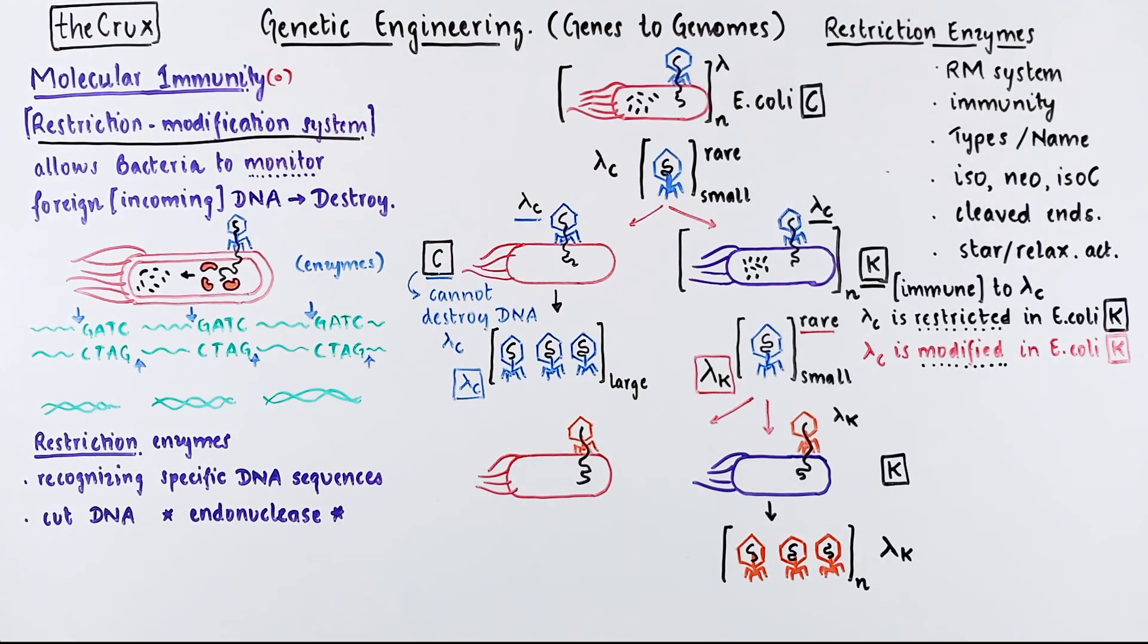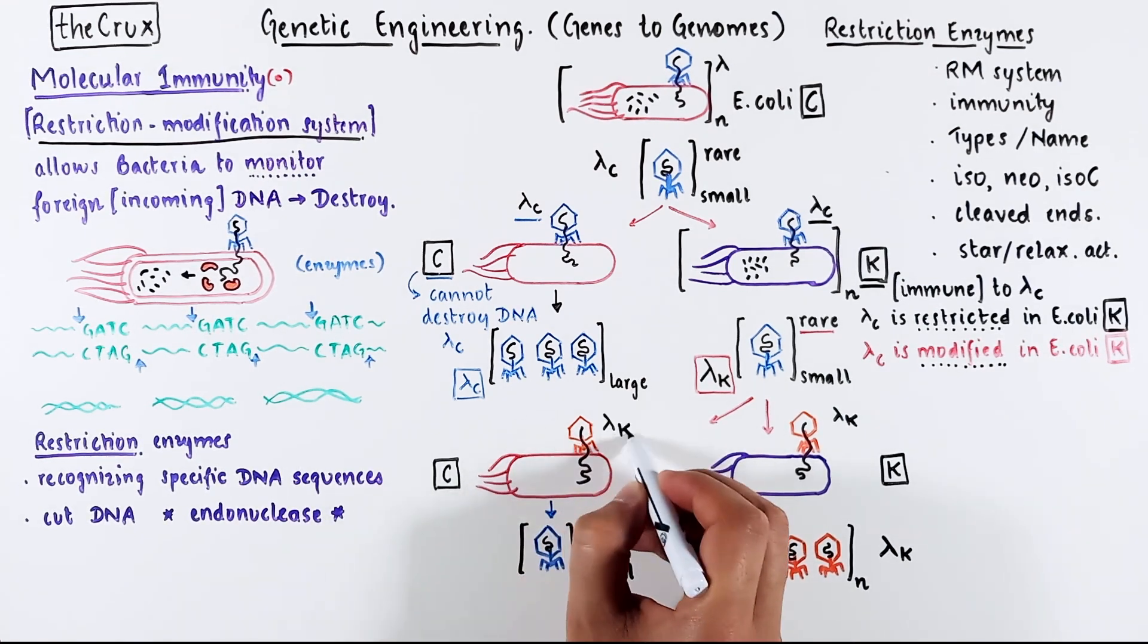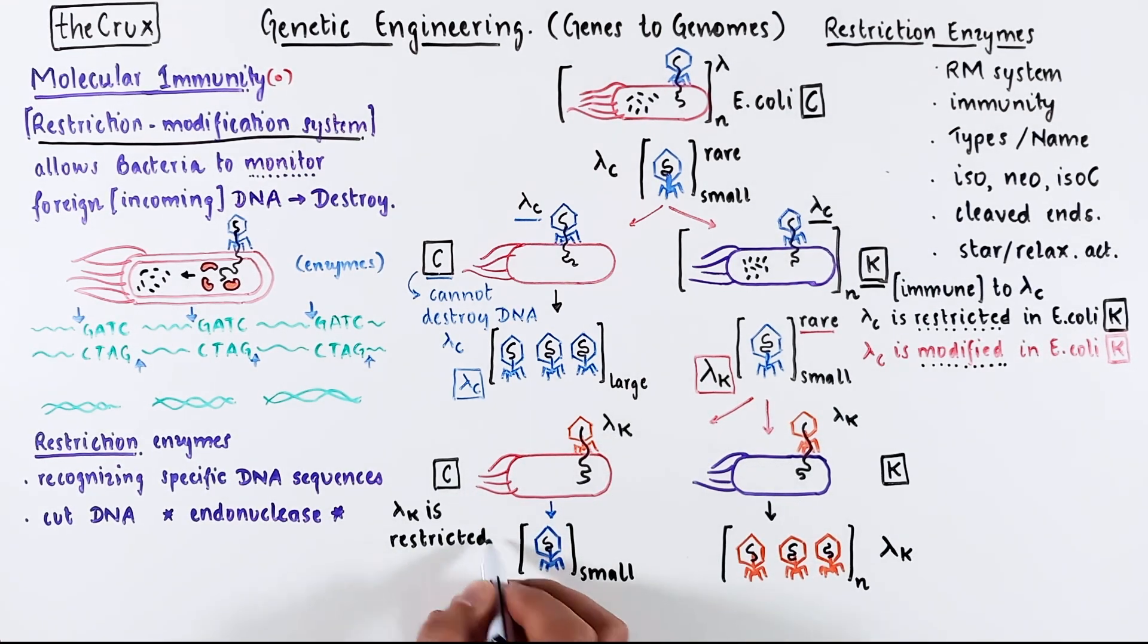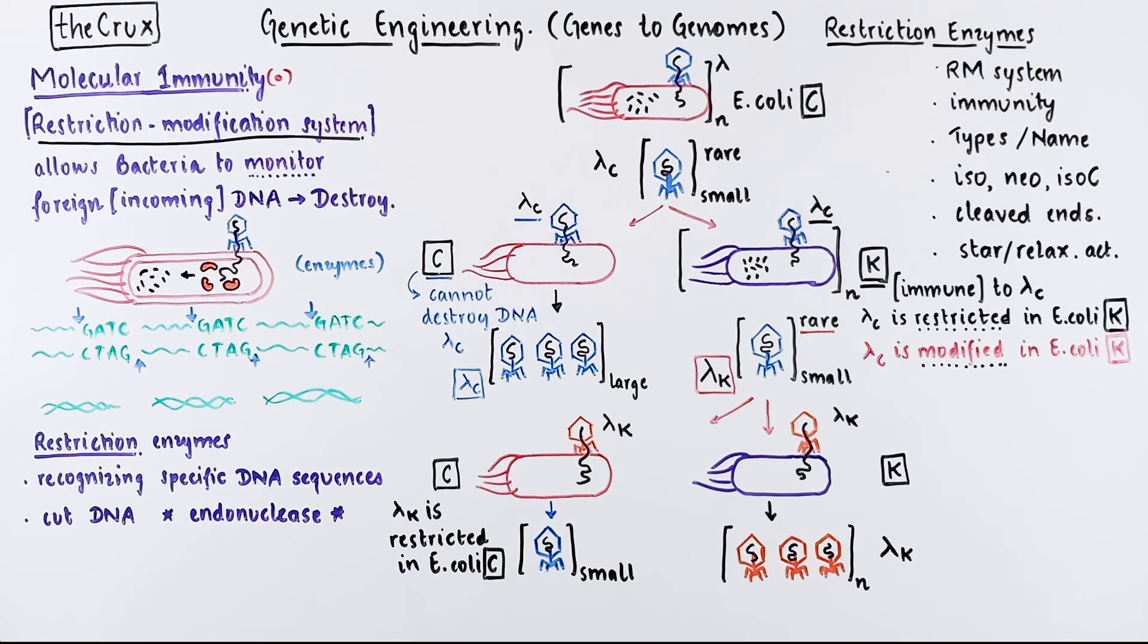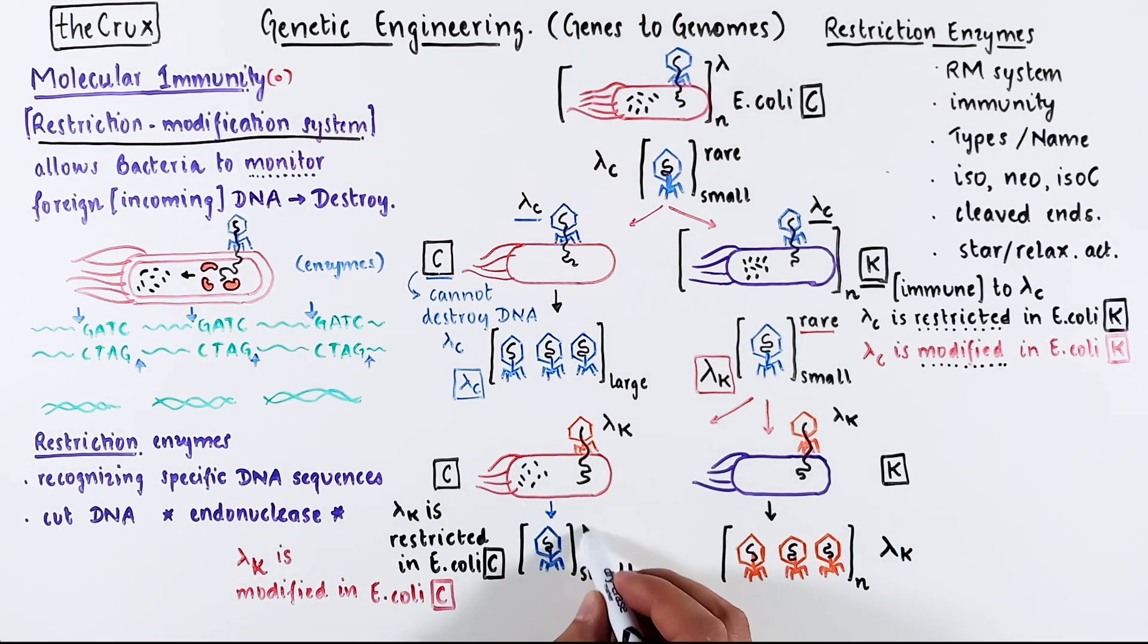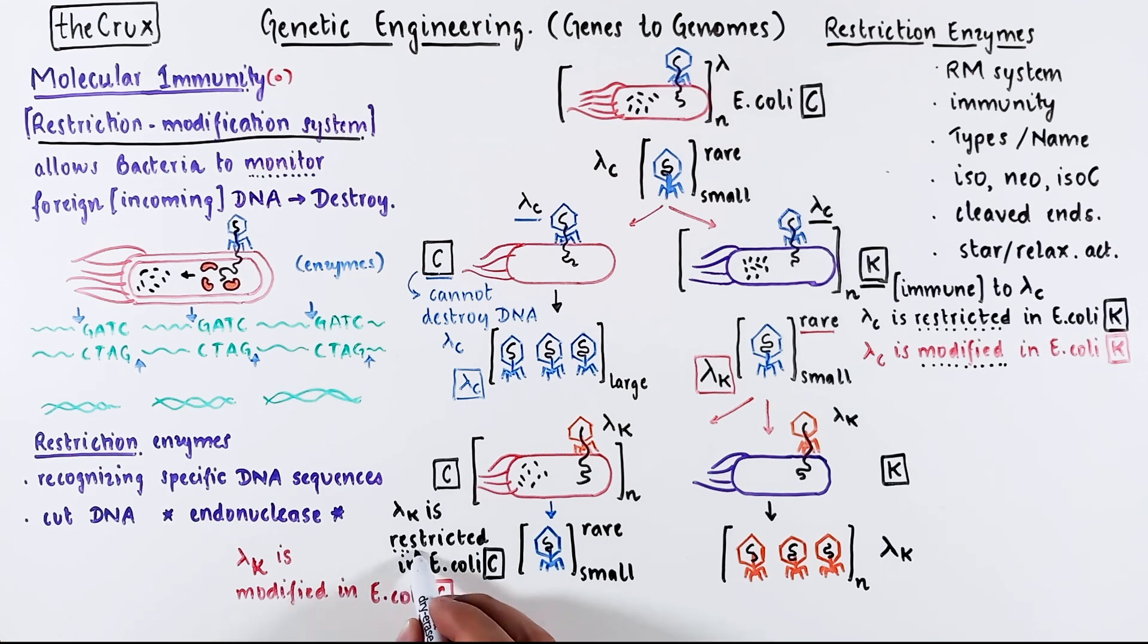In contrast, only rare virus particles are produced when bacteria C is infected with lambda K. So by definition, lambda K is restricted in E. coli C. And likewise, lambda K is also then modified in E. coli C. So through this process of restriction and modification, the rare virus is lambda C. You can continue the cycle of infection and you will keep observing the same restriction and modification pattern.